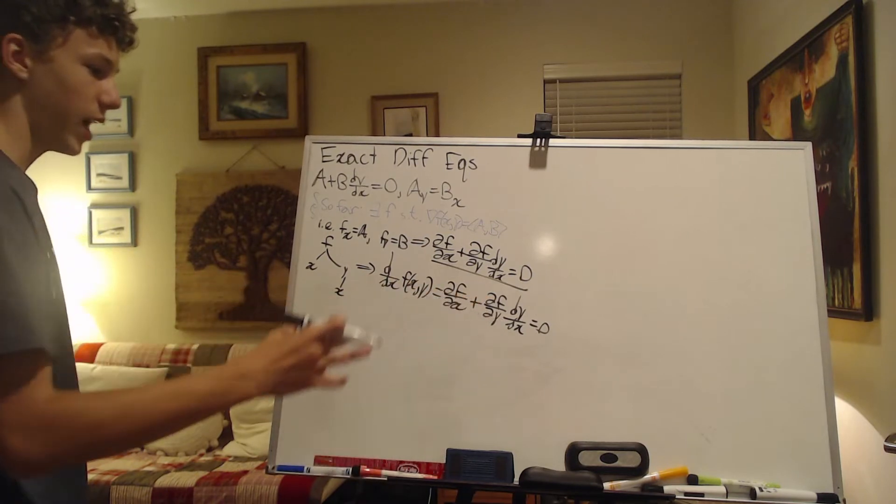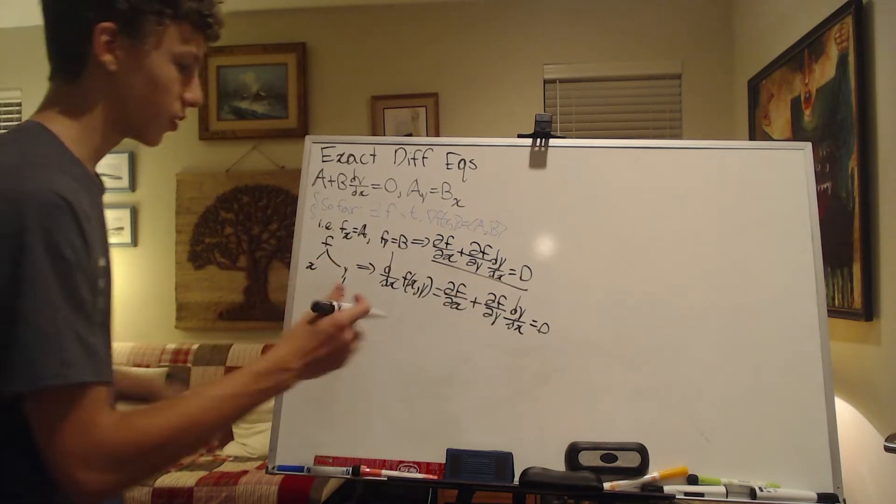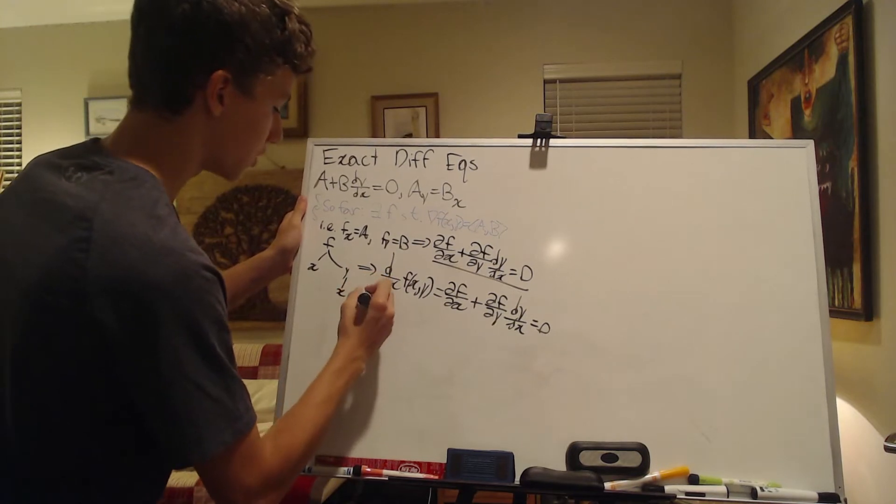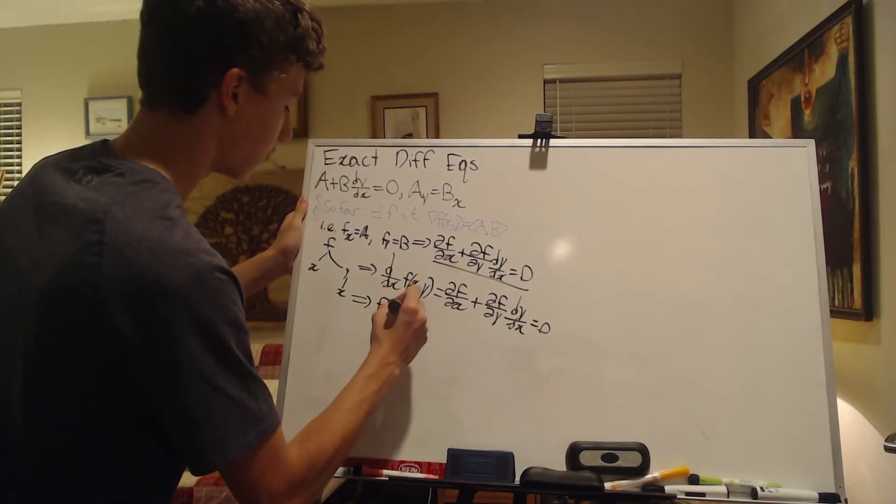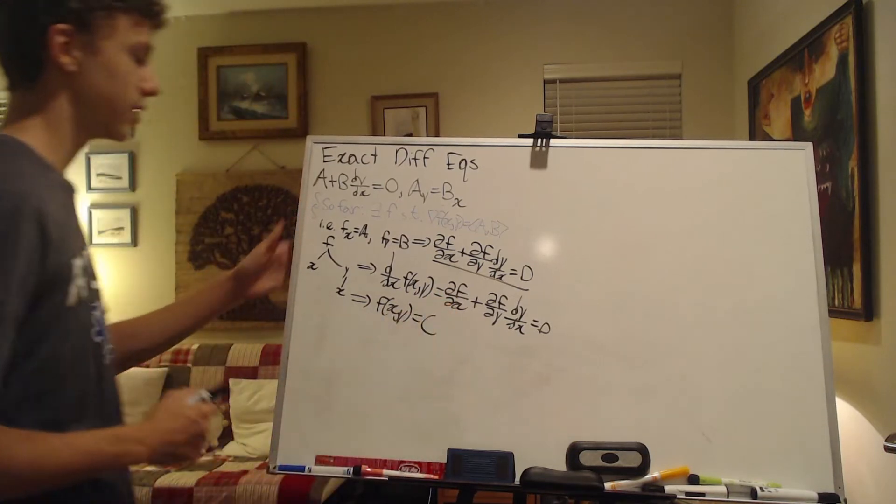And thus, what we have is, by integrating both sides using the fundamental theorem of calculus, we just get that F of X, Y is equal to some constant C.